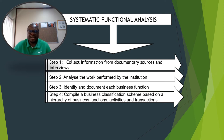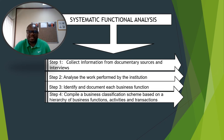In step two, you analyze the work performed by the institution — structurally from general to specific, meaning from functions down to activities and then to transactions. You must be able to identify those levels within the subjects from different documents. In step three, you identify and document each business function. These will be used in the file plan, so you write them down to avoid having to revisit the large source documents again.